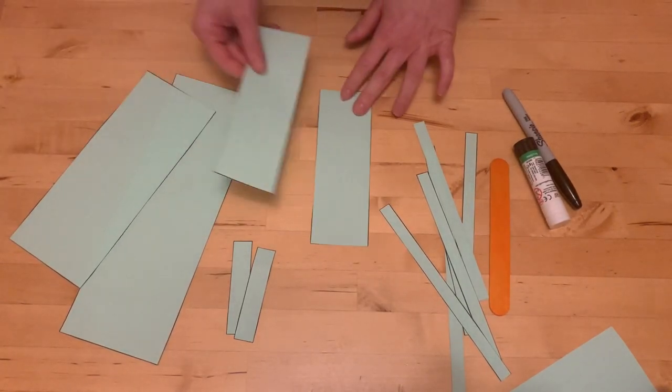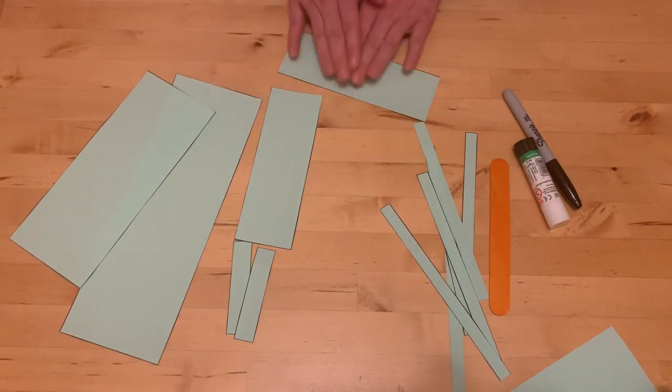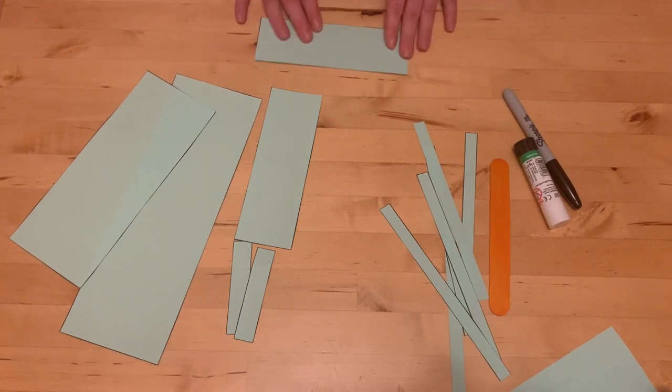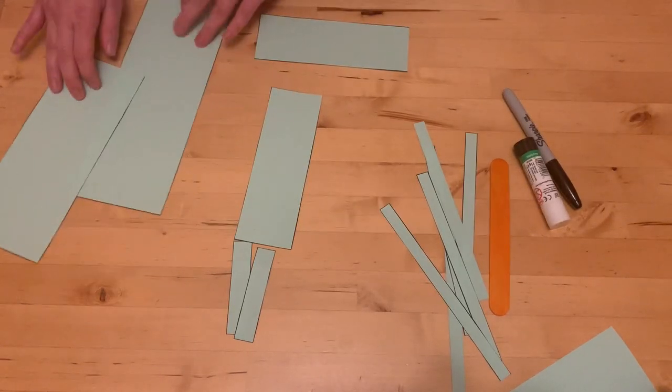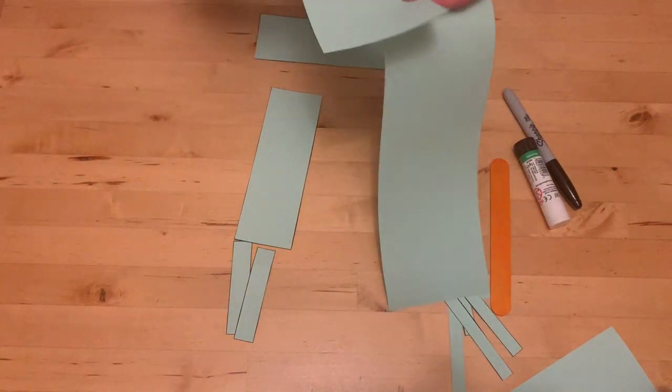Two of my pieces are the same size. One of these is going to be for the thorax and the other is going to go underneath your walking ant. The big part here is for the abdomen and the smaller one is for the head.